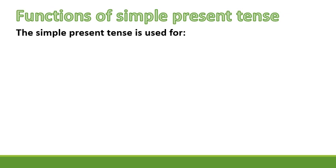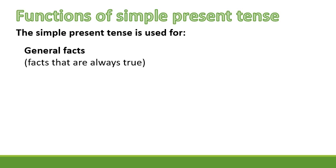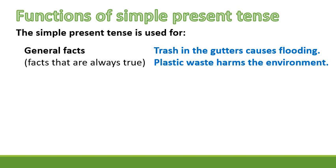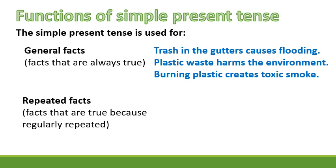Functions of the Simple Present Tense. The Simple Present Tense is used for two main functions. Firstly, general facts — these are facts that are always true. For example: trash in the gutters causes flooding; plastic waste harms the environment; burning plastic creates toxic smoke.